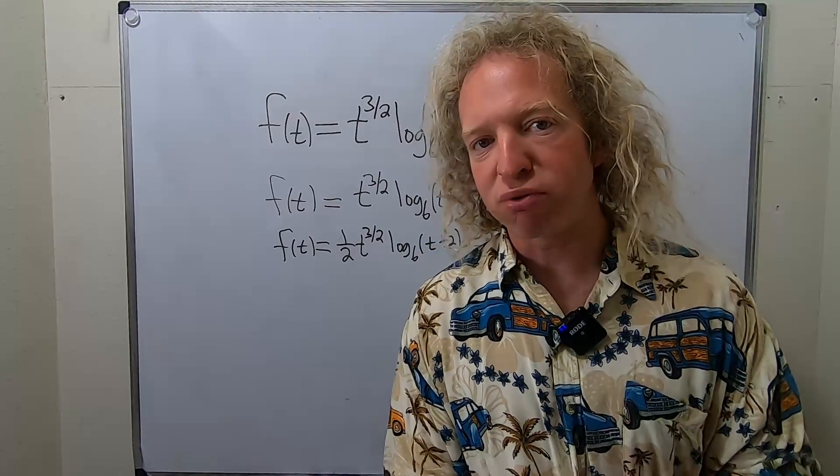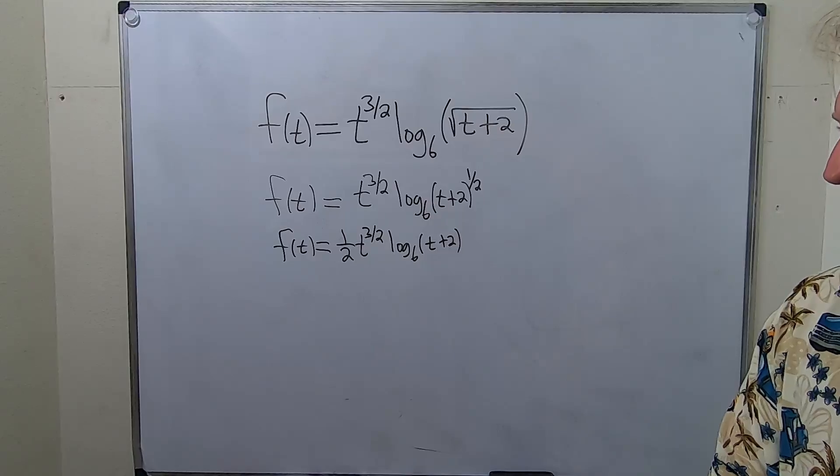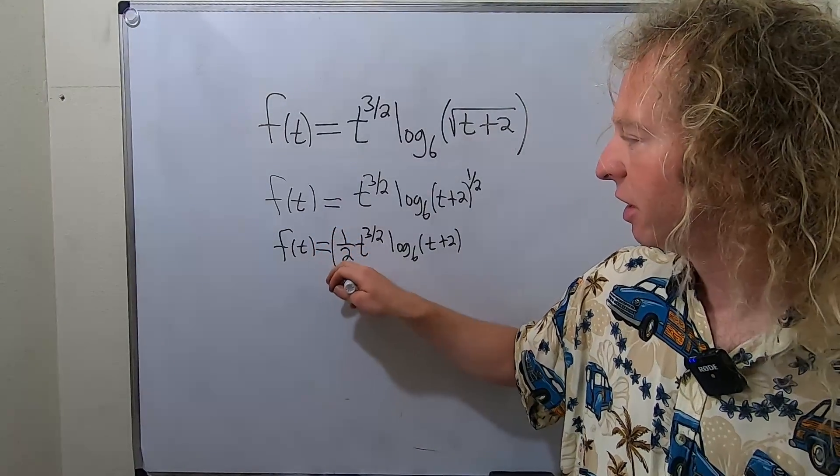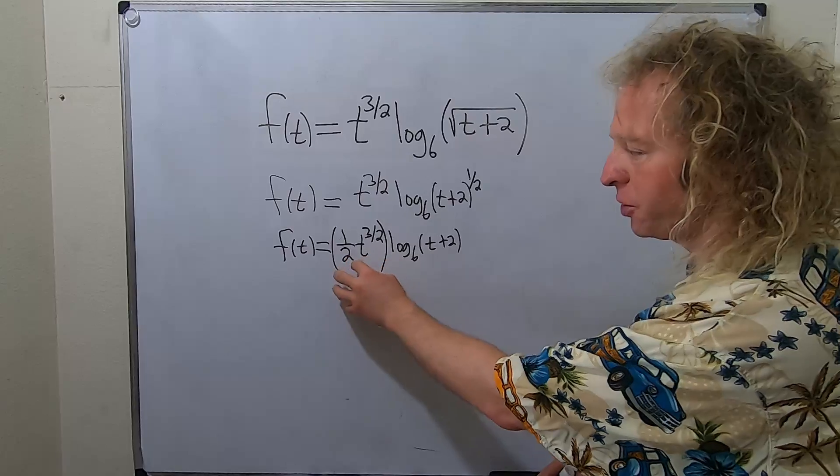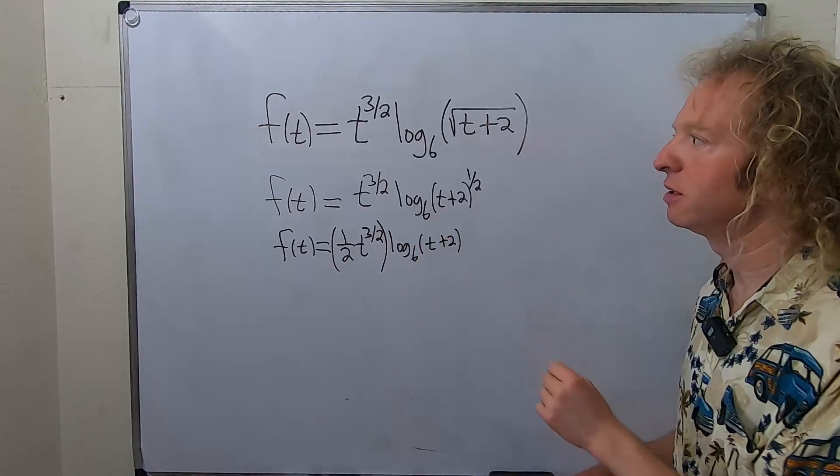And so now we're going to use the product rule to find this derivative. So I'm gonna insert parentheses here just to add clarity for myself. So now we know what the first piece is and what the second piece is.